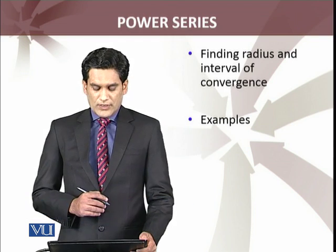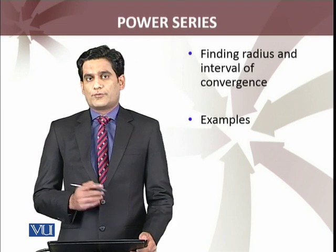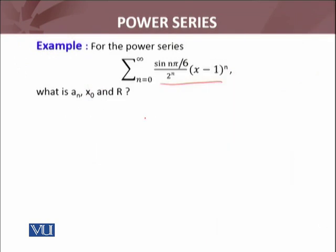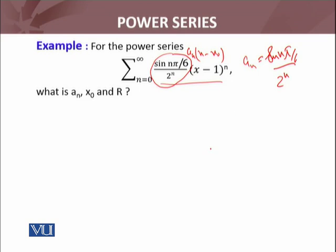So, finding radius and interval of convergence of certain power series. The first example is for the power series given by this expression. We need to identify a_n. Comparing with a_n(x - x_0), my a_n is sin(nπ/6) divided by 2^n, which is a constant.